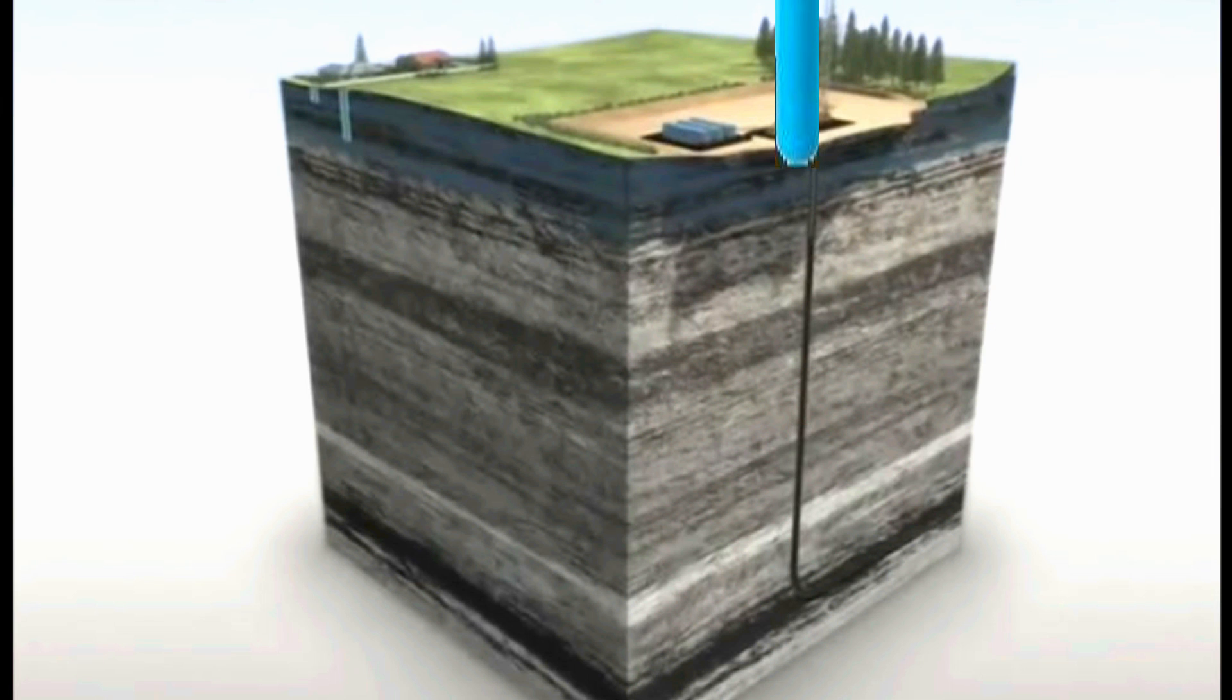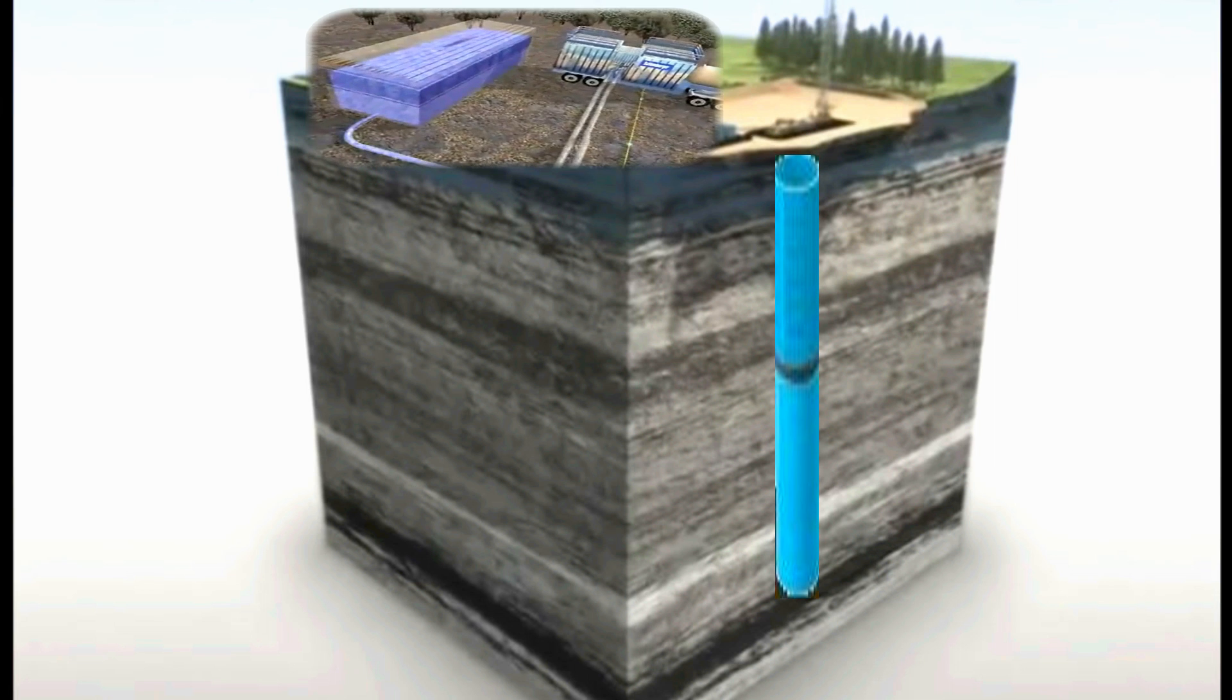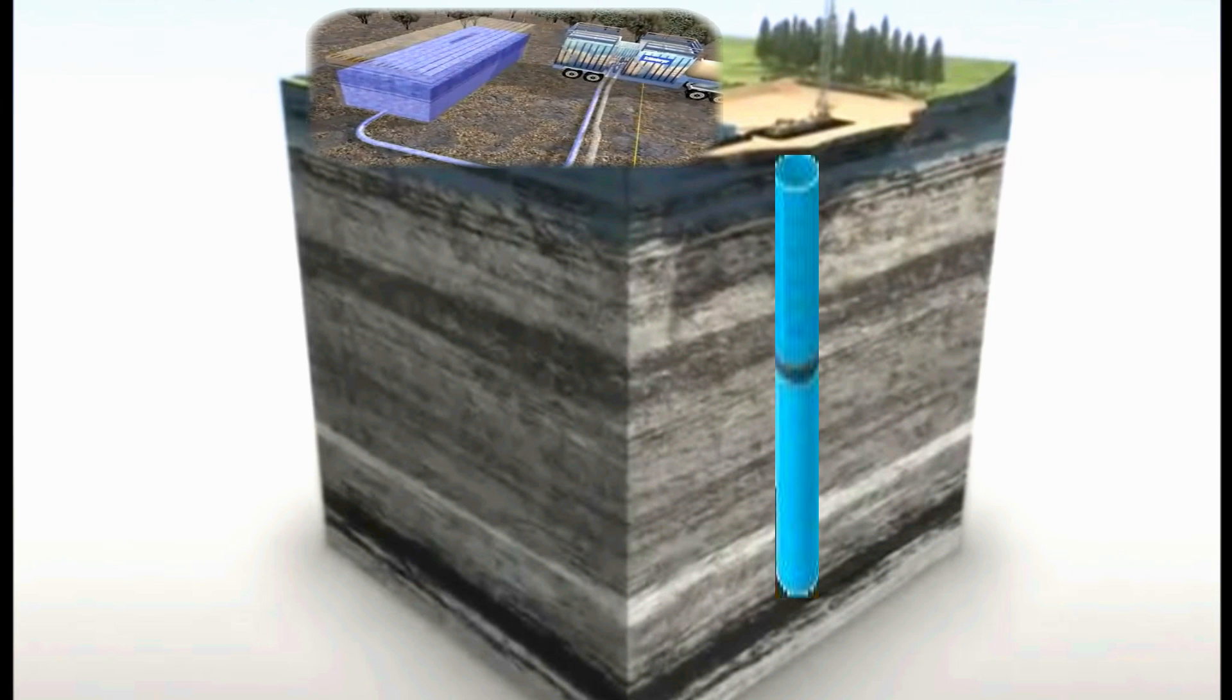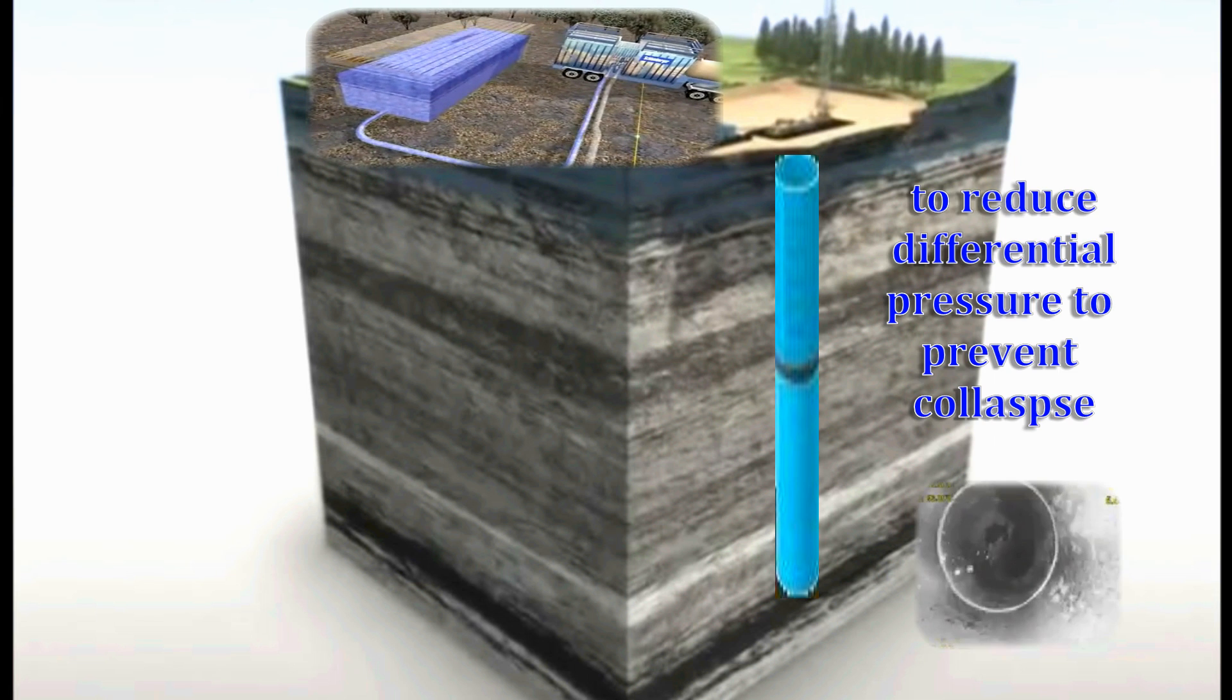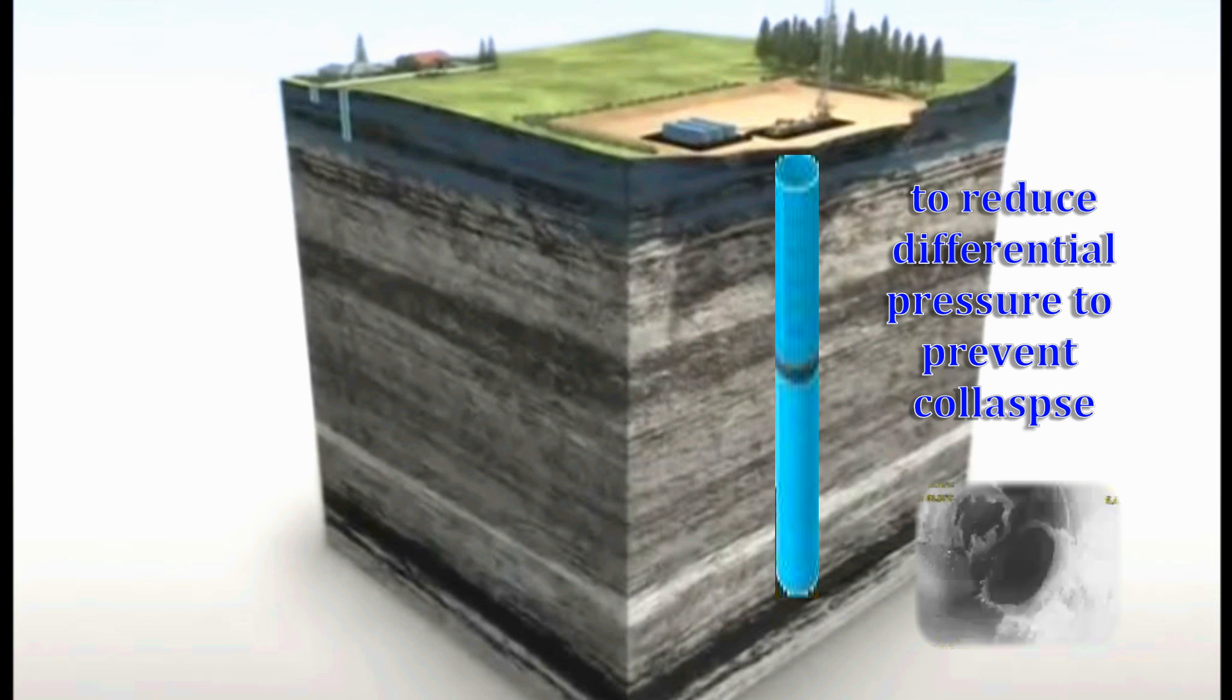As the casing is run in the hole, the casing pipe is periodically filled with water at the surface to reduce differential pressure that might cause the casing to collapse.